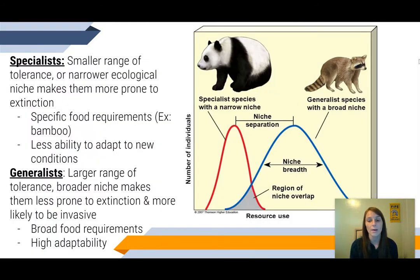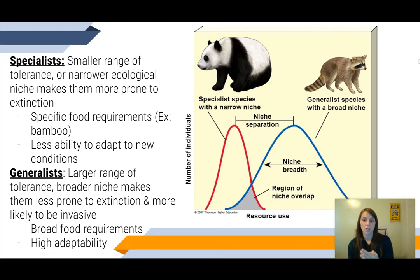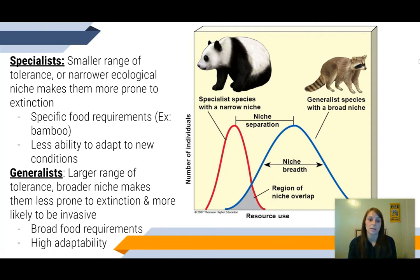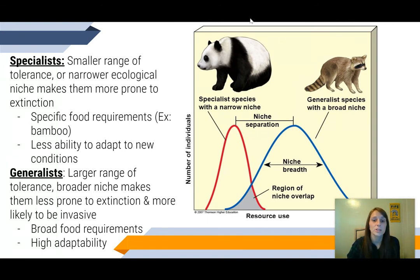When we're talking about animals, there are two different categories that we can put them into: specialist species versus generalist species. Specialist species are animals that have a smaller range of tolerance or narrower ecological niches, and this makes them more prone to extinction. They're more prone to extinction because they have very specific food requirements, which makes them less able to adapt to new changes. A perfect example of a specialist species is the panda.